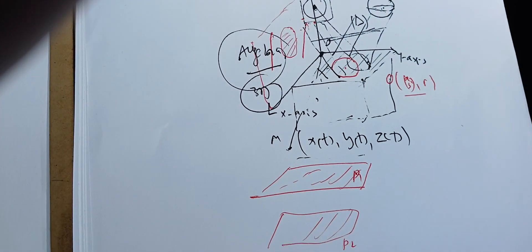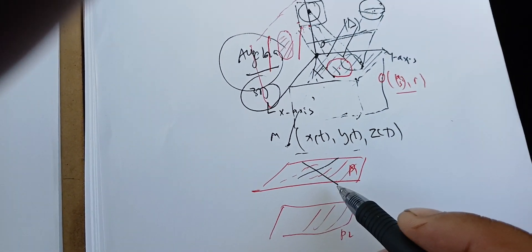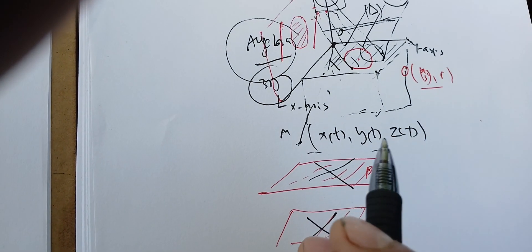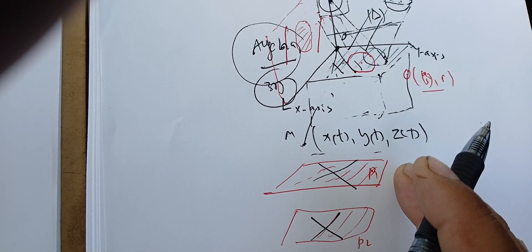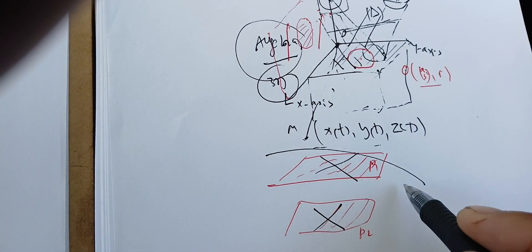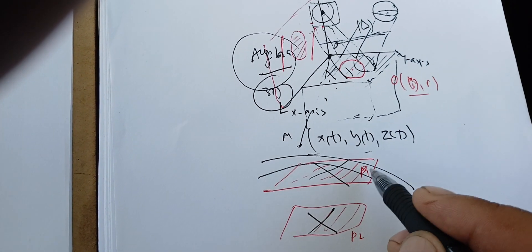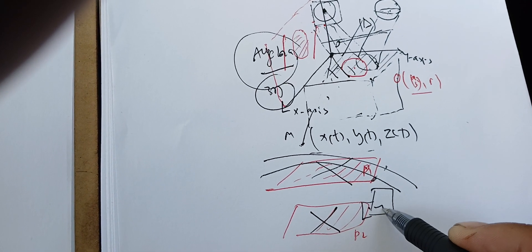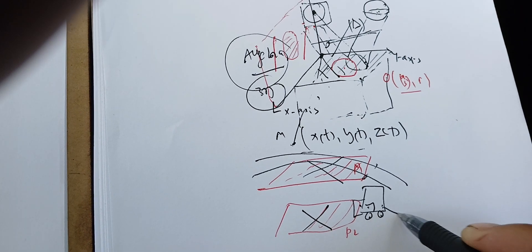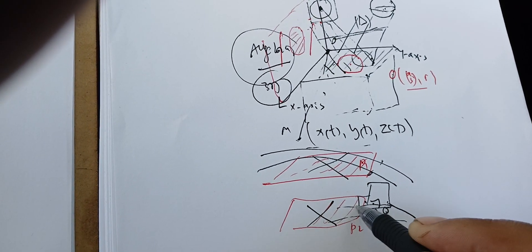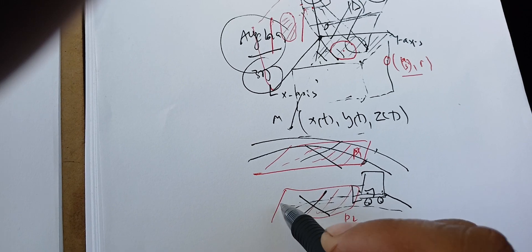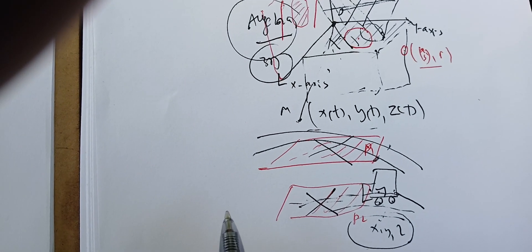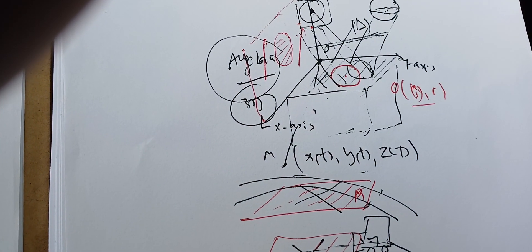Moreover, if we have two planes P1 and P2, when can we say they are parallel? How can we express parallel lines? And movement in space — when we have two points, or a car, or a plane moving in space, how does it change? The movement is described by x, y, and z depending on time. That's what we're going to do this summer.